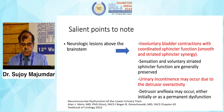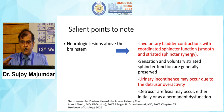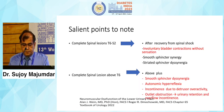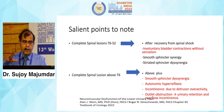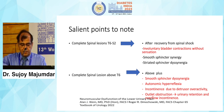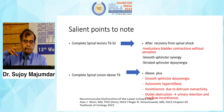When neurological lesions are above the brainstem level, involuntary bladder contractions occur with coordinated sphincter function, and urinary incontinence may result from detrusor overactivity. With a spinal lesion between T6 and S2, there are involuntary bladder contractions without sensation. A complete spinal lesion above T6 leads to smooth sphincter dyssynergia, autonomic hyperreflexia, and incontinence due to detrusor overactivity. In spinal lesions, it is primarily a case of detrusor overactivity; the sphincter problem comes secondarily.